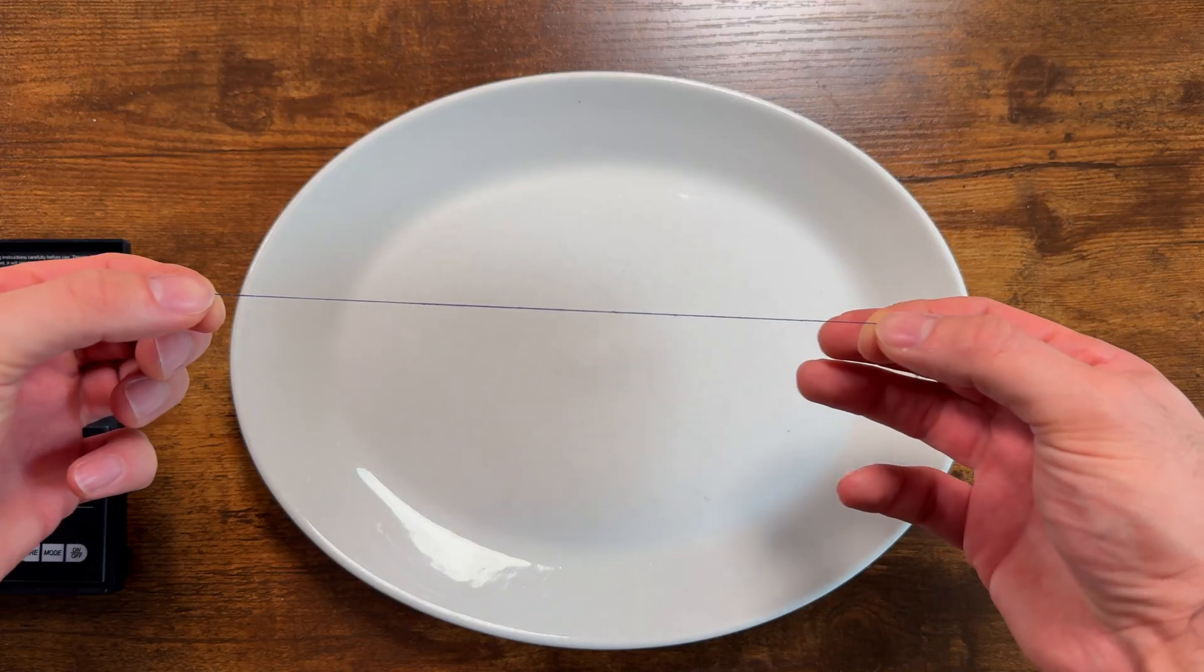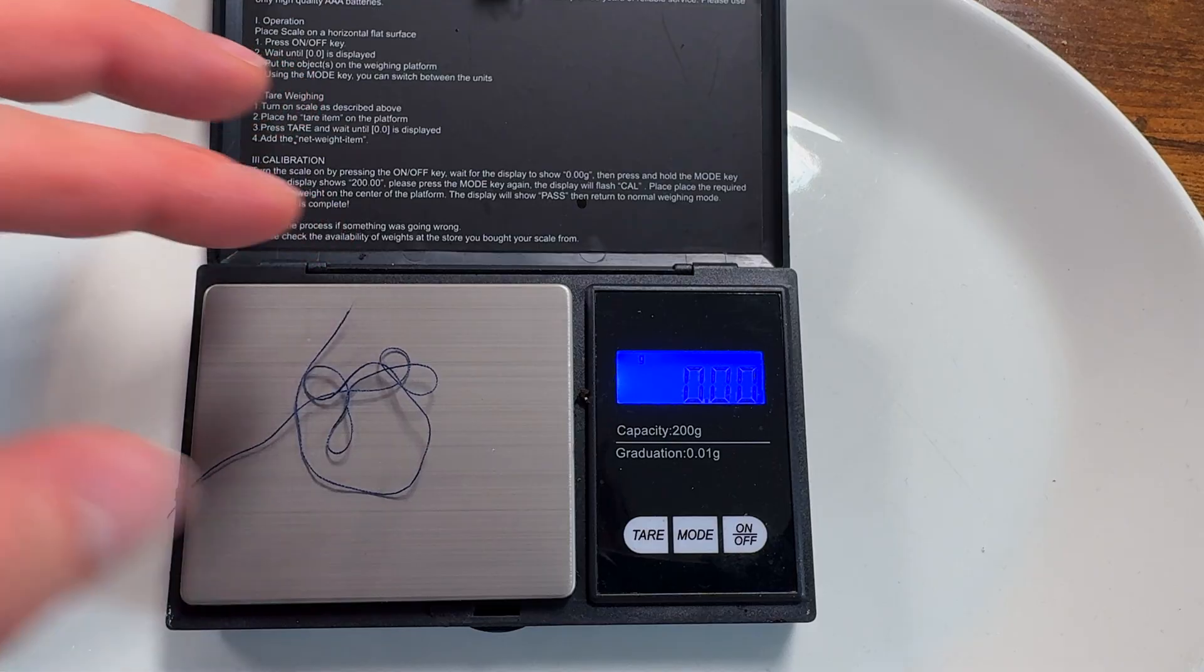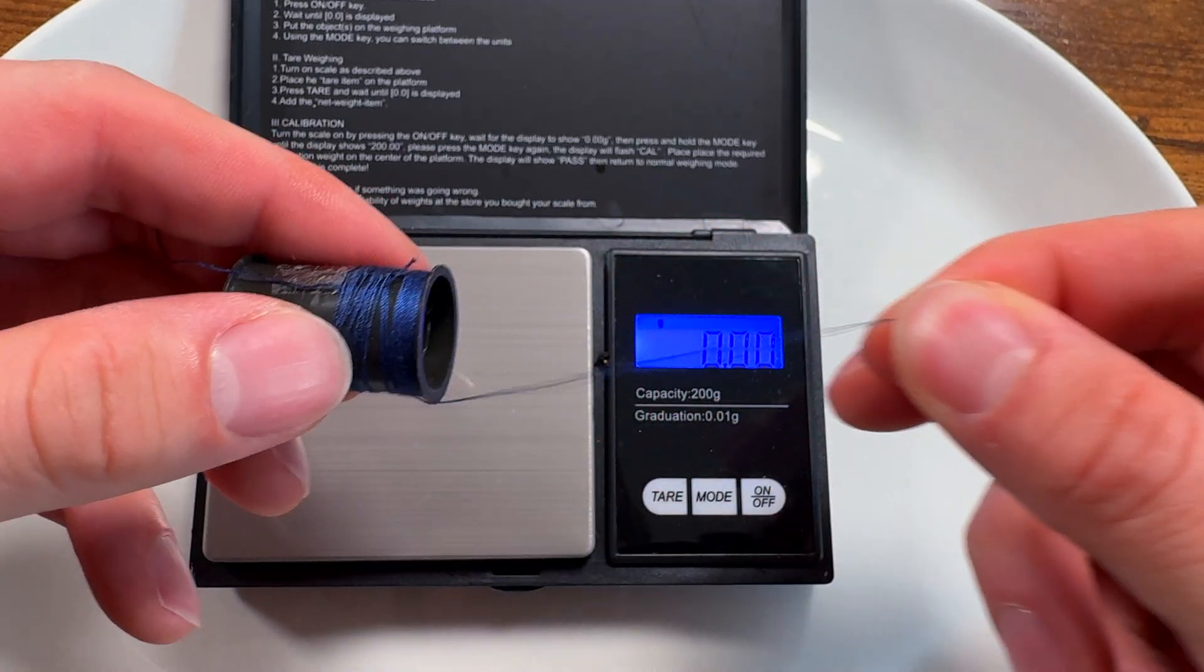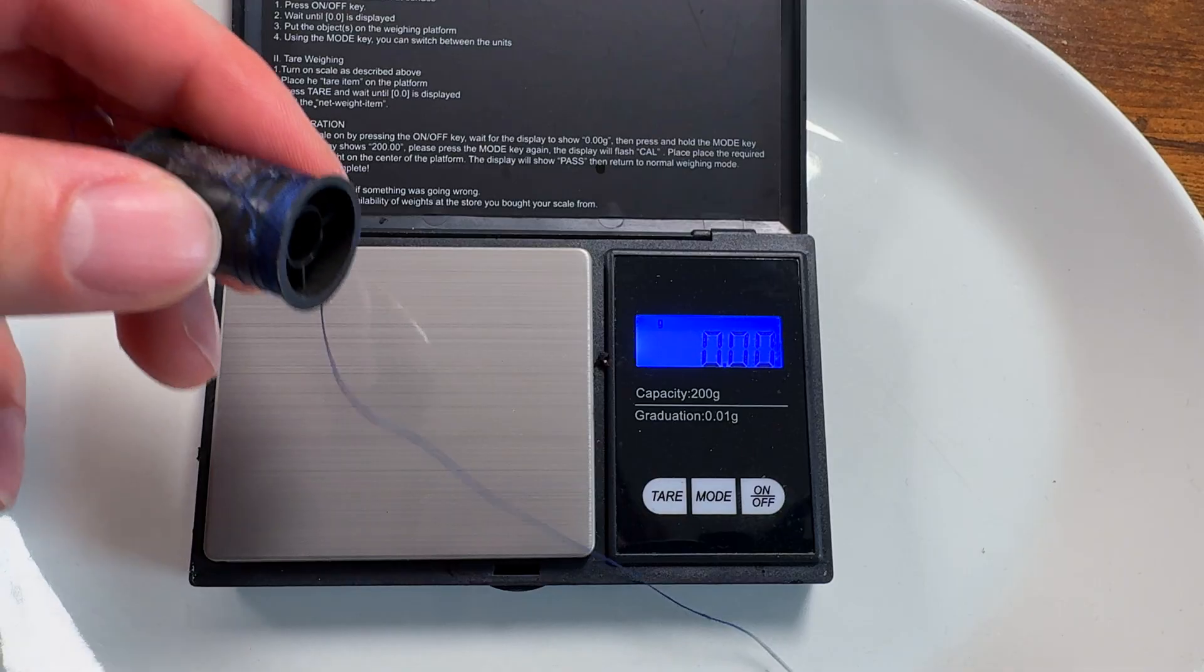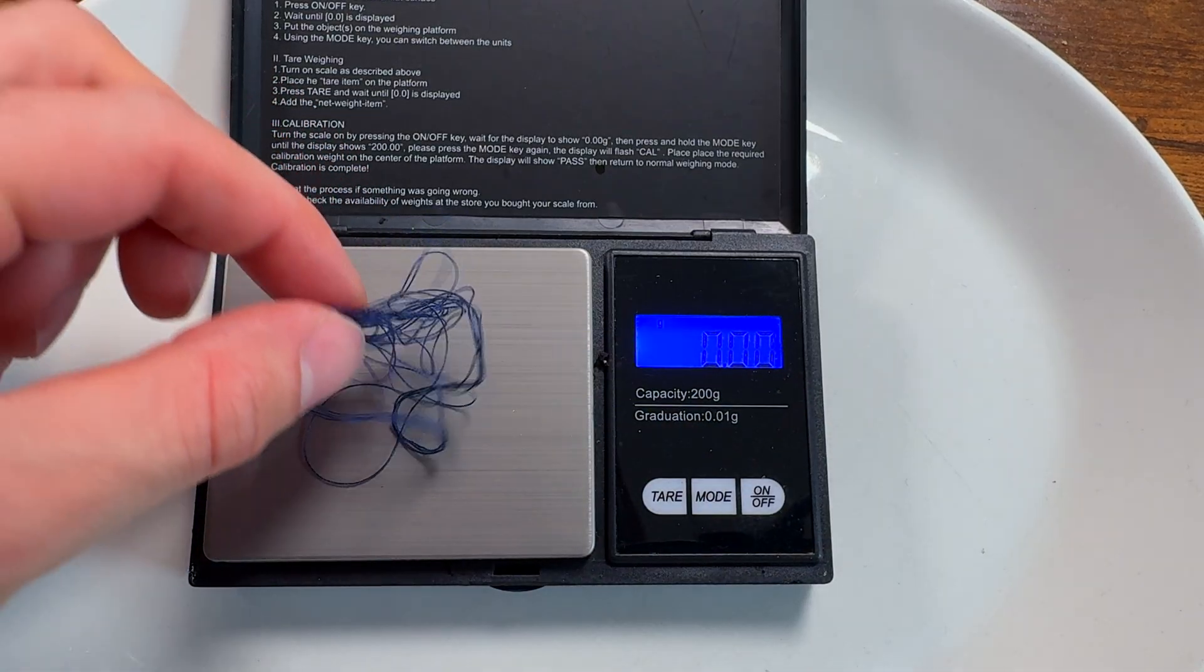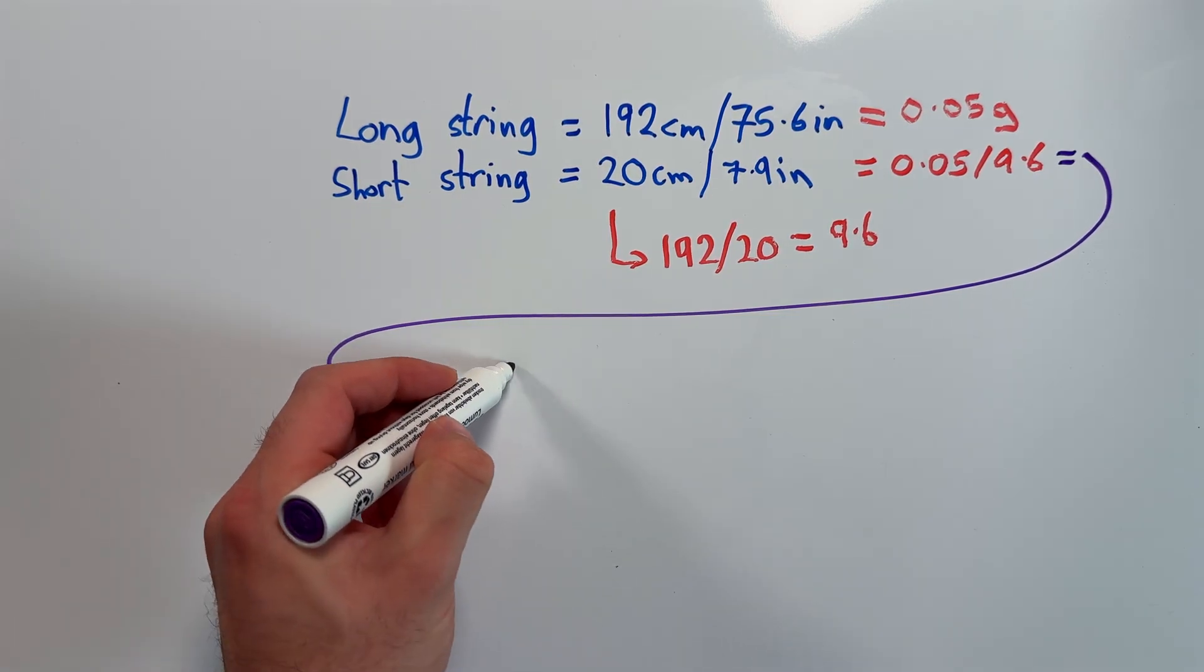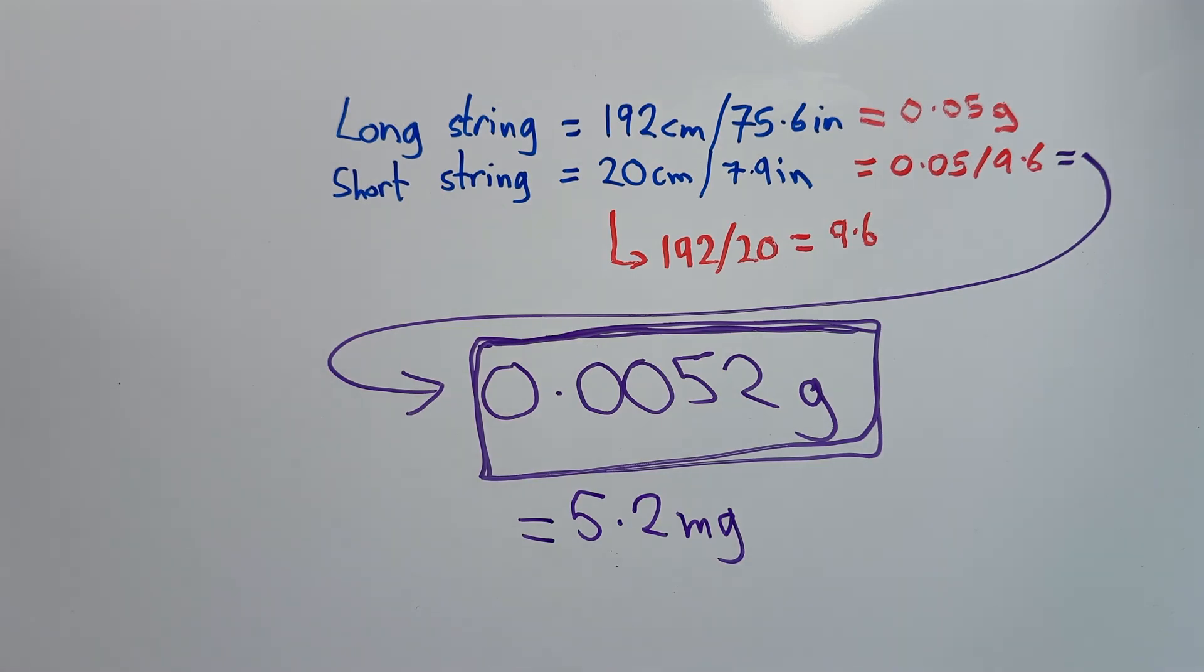Okay, so he lifted this much string. If we weigh it, it says zero. It's too light to register the weight. But if I take a lot of string and weigh that, it says zero point zero five grams. From this we can work out the original string weight, which was zero point zero zero five two grams, or five point two milligrams.